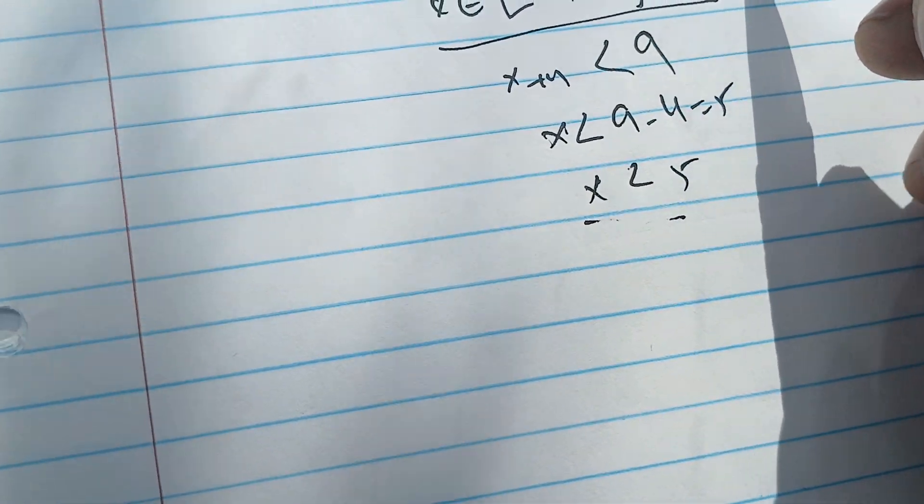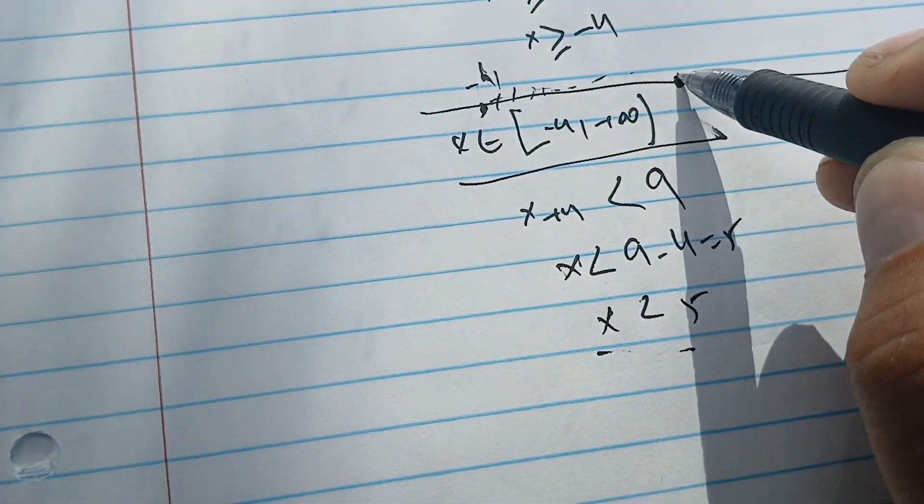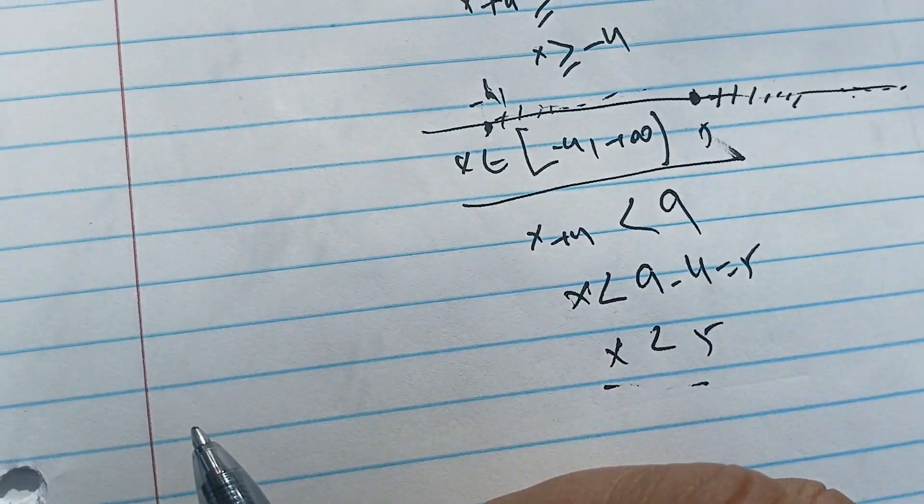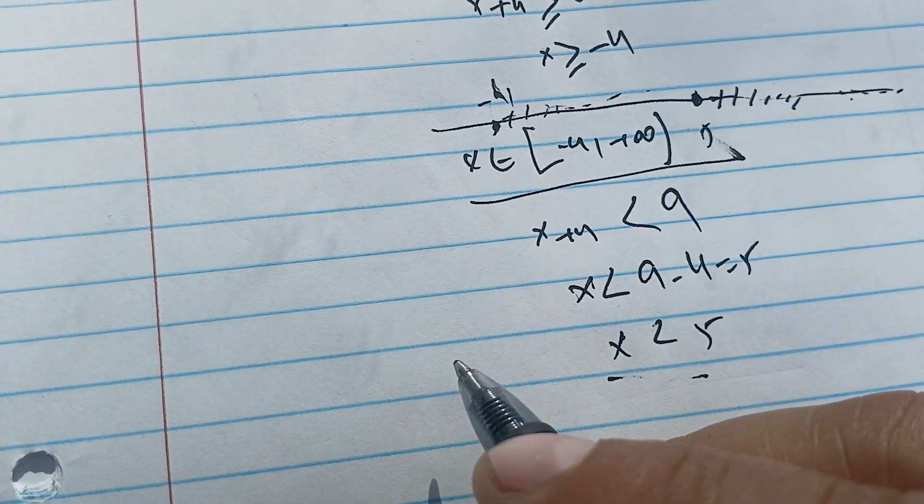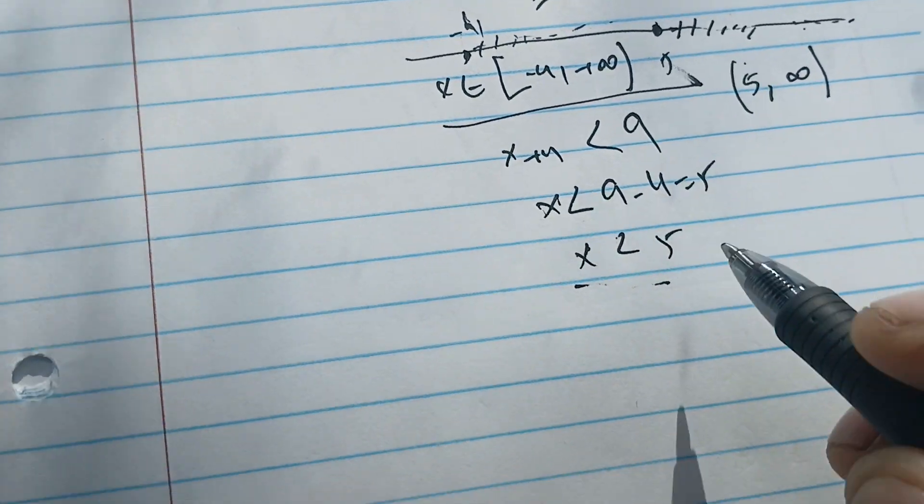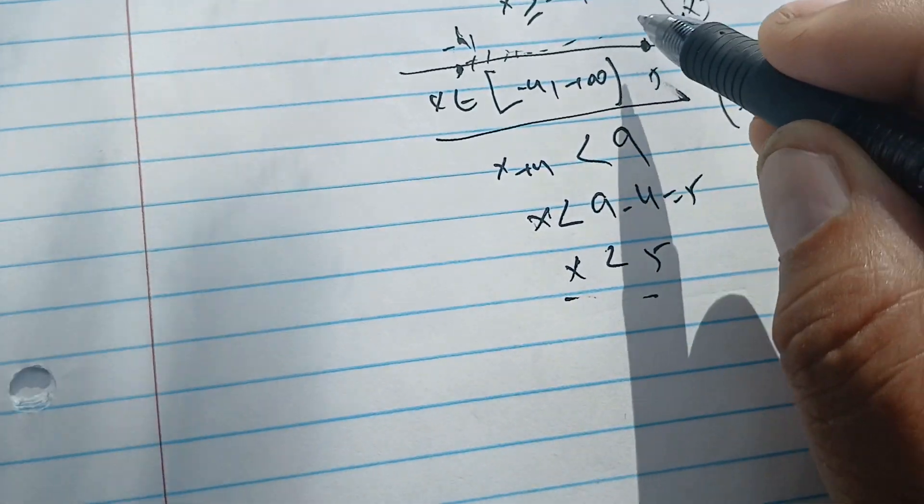Okay, so here we have this condition. To have this condition, we need to have all the values that are bigger than 5, and what are these values? Those values belong to 5 plus infinity. But we already know that the x values are in the other interval.